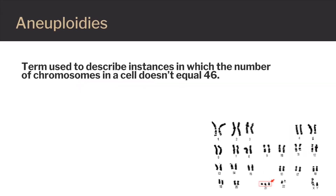Aneuploidy is the term used to describe instances in which the number of chromosomes in a cell does not equal 46. For example, there can be an extra copy of a chromosome — trisomy — or a missing copy of a chromosome — monosomy — making the total number of chromosomes not a multiple of 23.